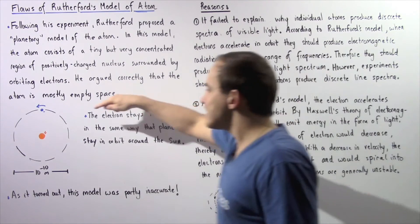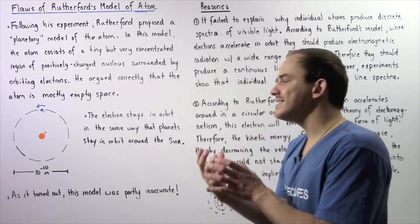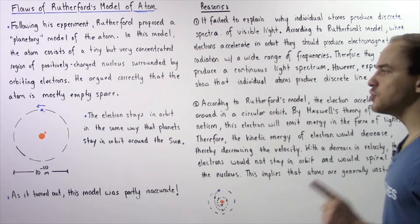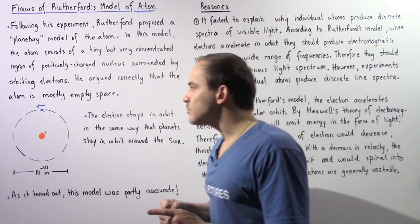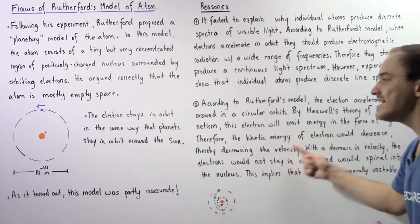So basically, as the electron accelerates, it continually releases energy in the form of light. Now, by the conservation of energy, if the electron loses energy, that means it loses kinetic energy.